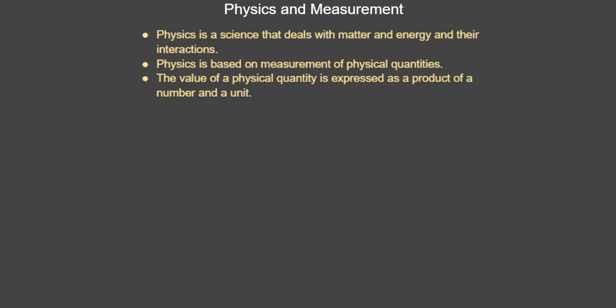In physics, we do a lot of measurements — you measure time, length, force, pressure, and all kinds of measurements. That's why you can't do physics without measurement. We measure physical quantities like time and length. These are things that exist in the physical world — they are all physical quantities.